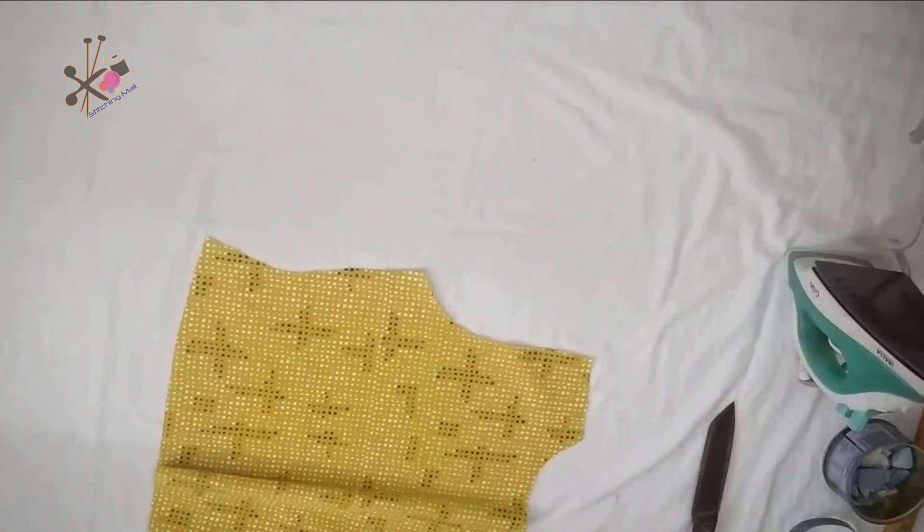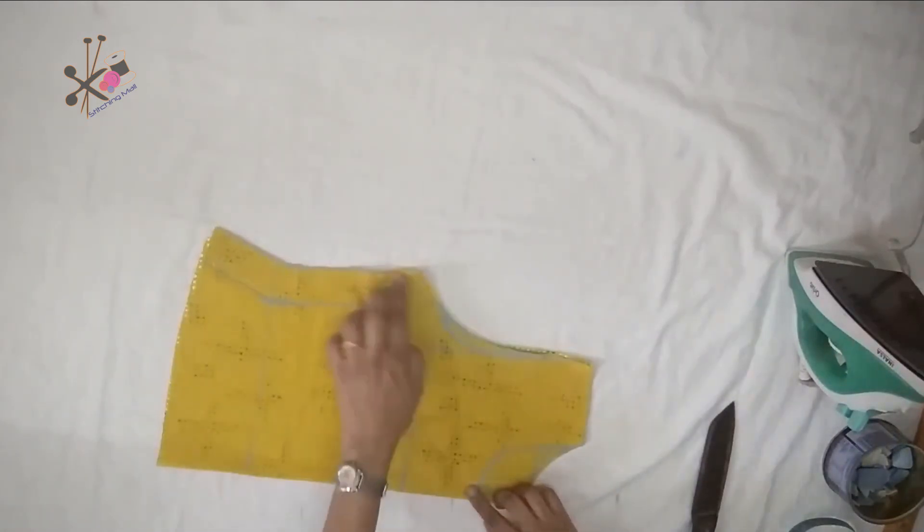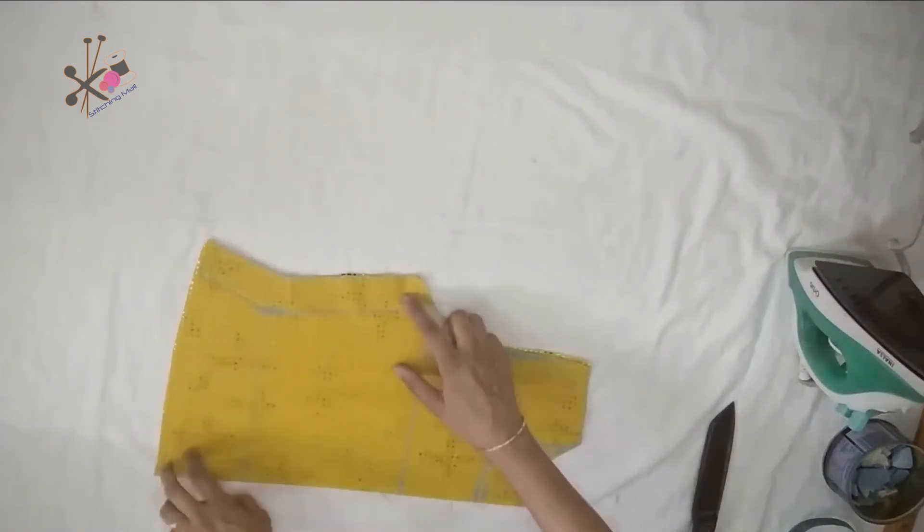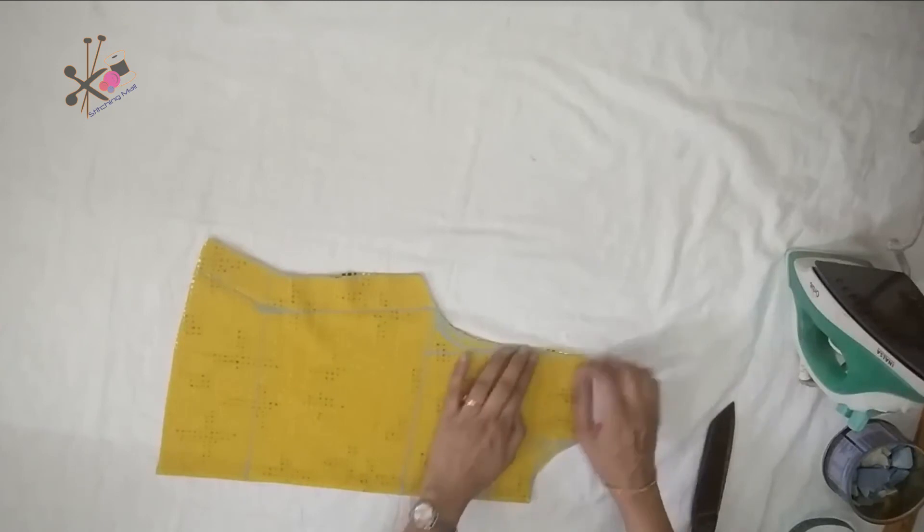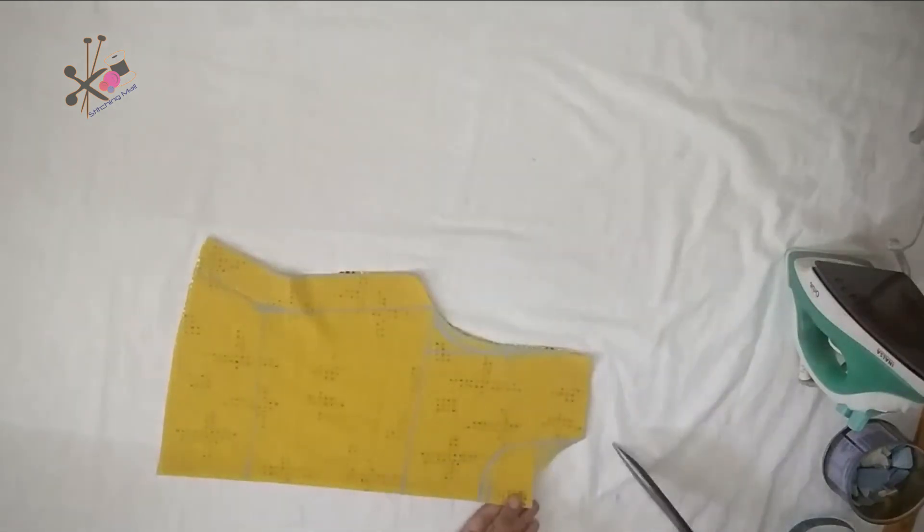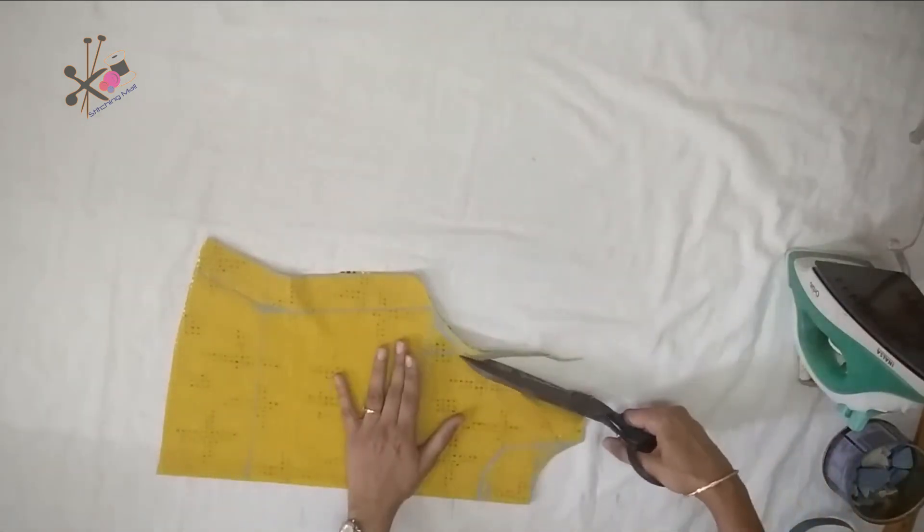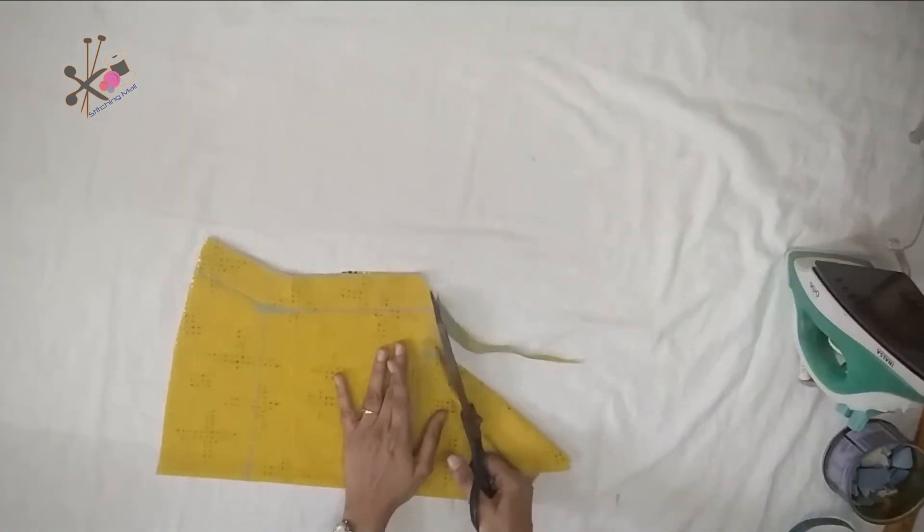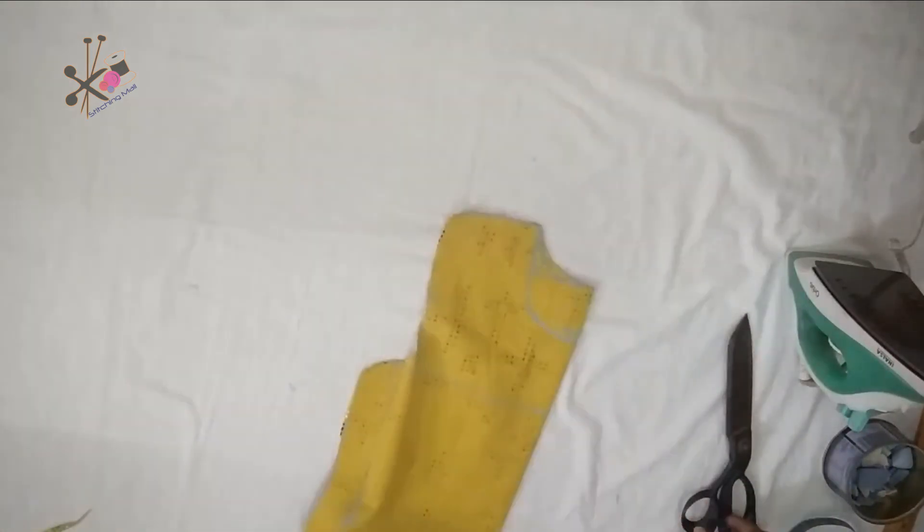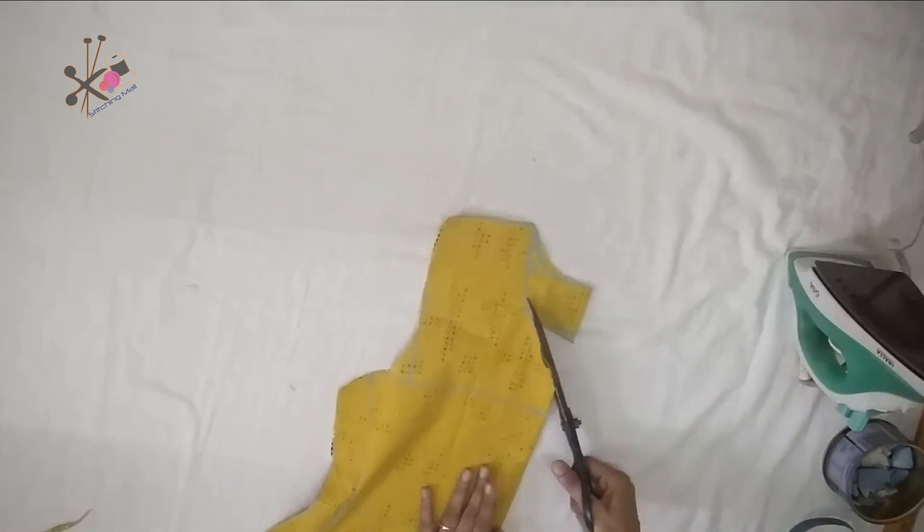We separate the inner part because we are cutting front and back together, so we can cut the front of our dress, the armhole, and the neckline.